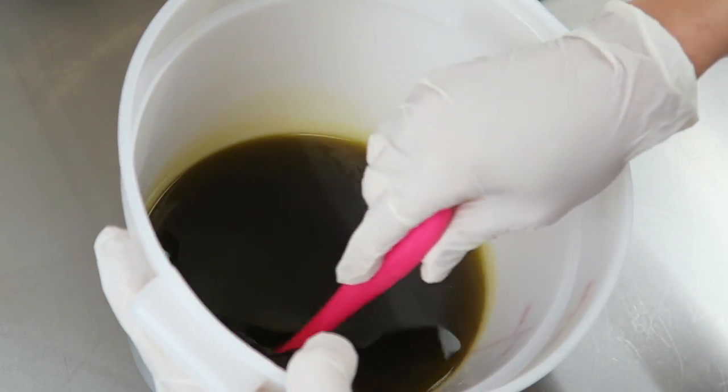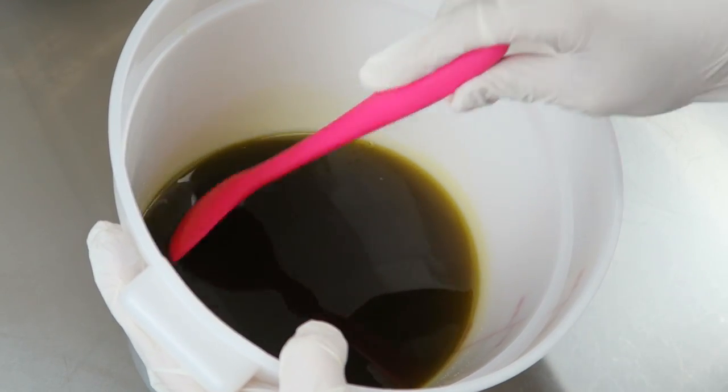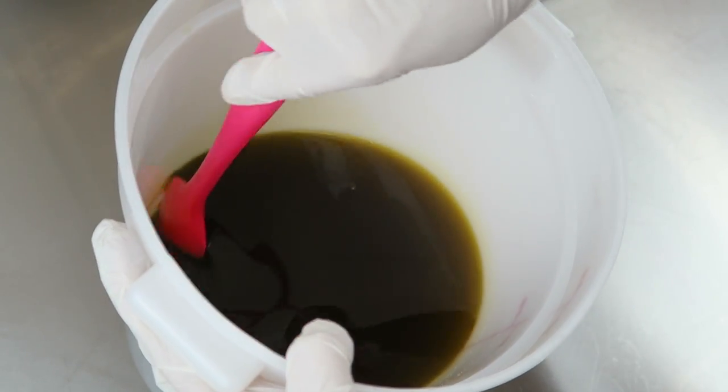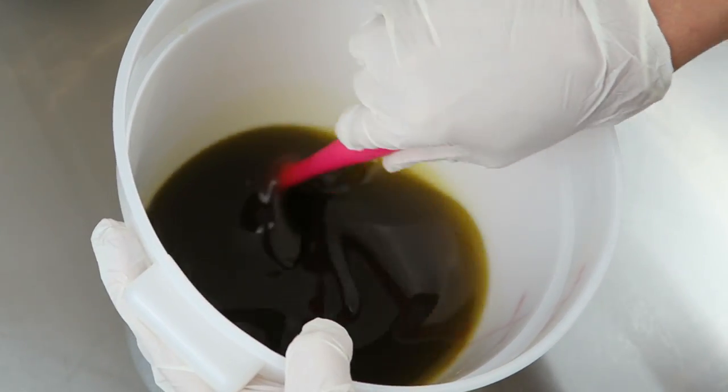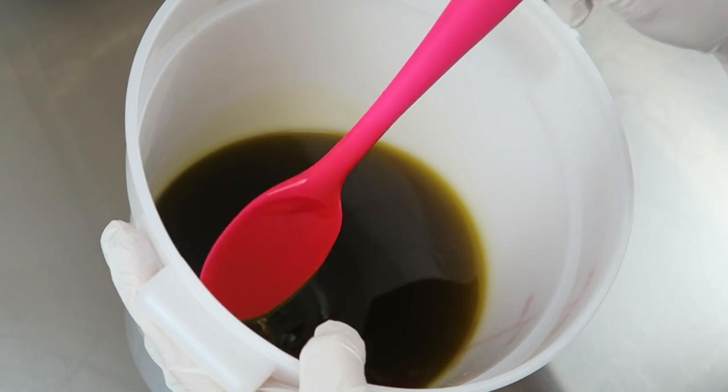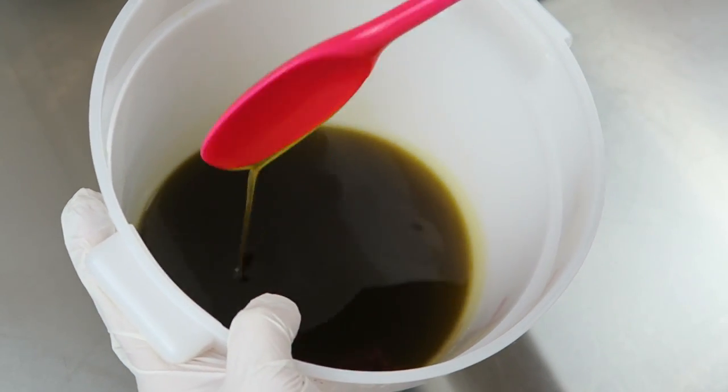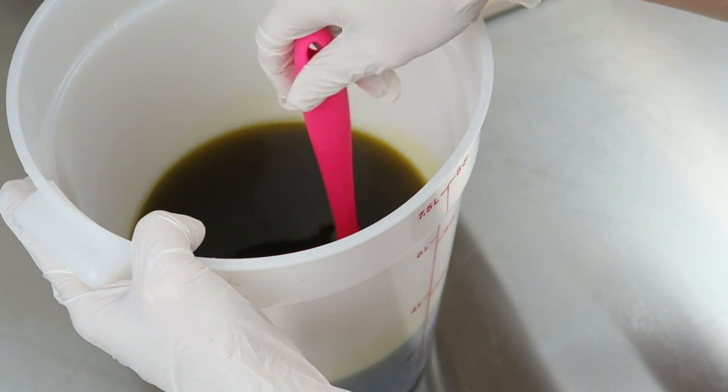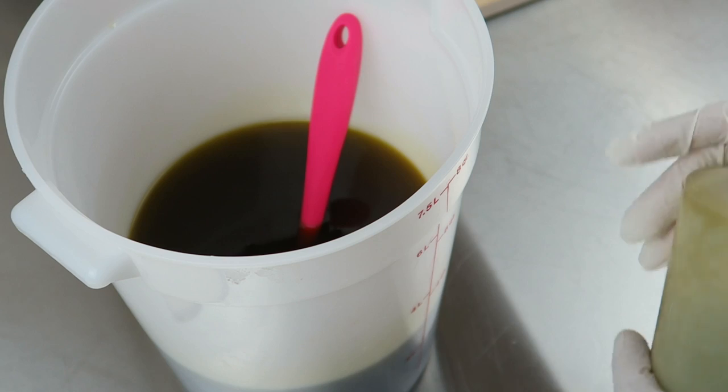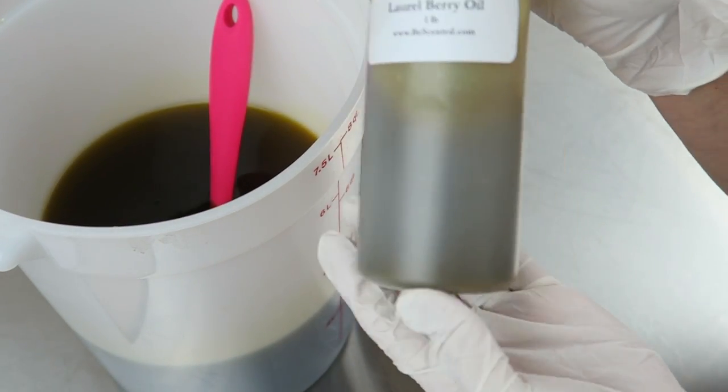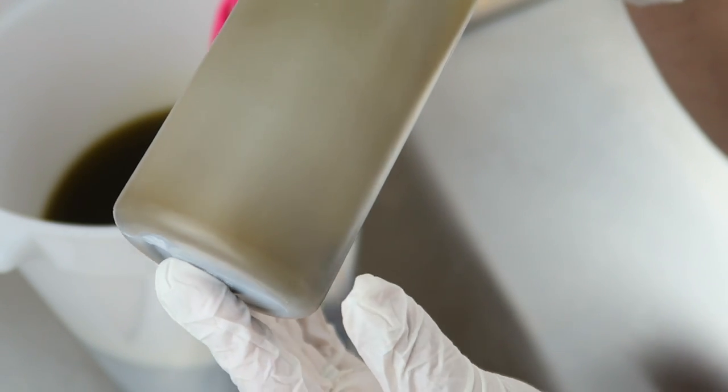You can see how dark this is. When Aleppo soap is made, it's typically a dark green color and it matures out to a khaki. Aleppo soap needs to cure for six months, but the longer you leave it the better. This is super dark and the laurel berry oil has a very distinct smell. It's very earthy and almost reminiscent of neem oil.